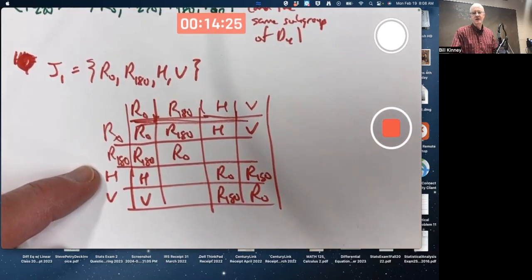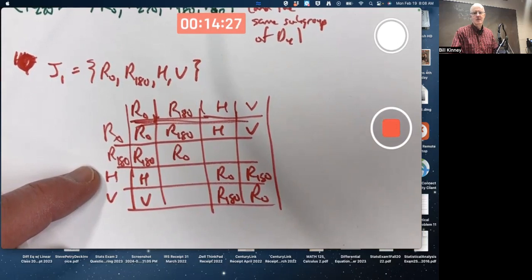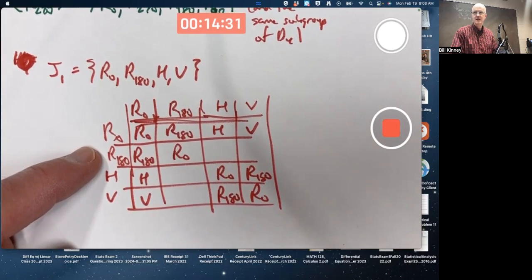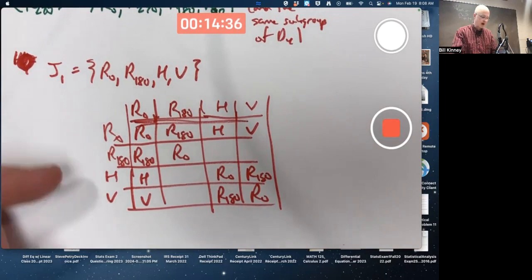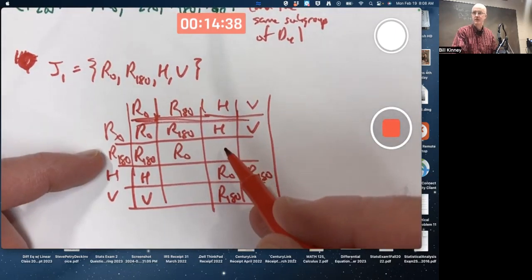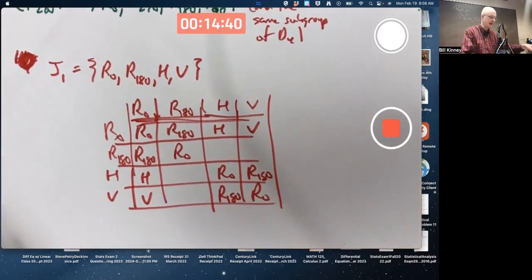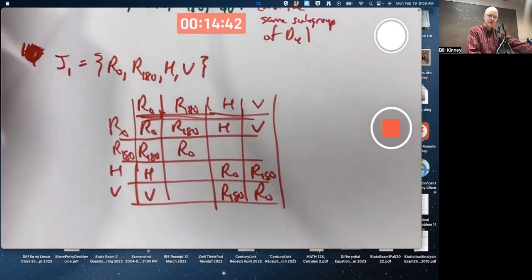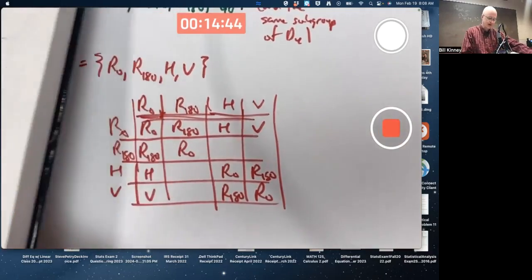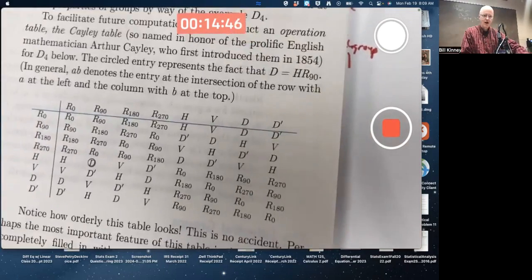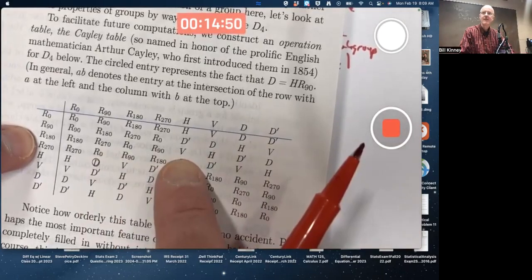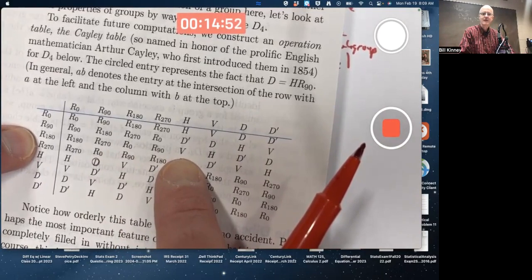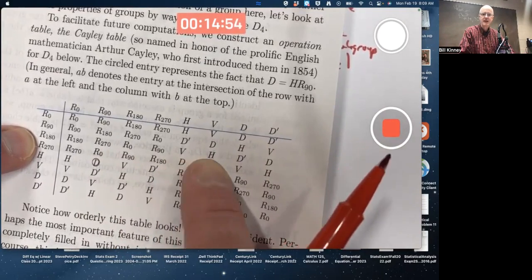So the only question left is, what is R180 composed with H and V? Do I stay within this set? For example, is R180 composed with H equal to V? It should be, if this is going to be a subgroup. Let's take a peek. You can try drawing a picture to see if you can figure it out, but R180 composed with H is V. Right there.